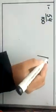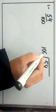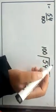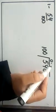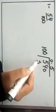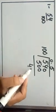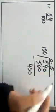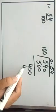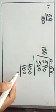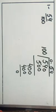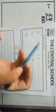Part 1 is 54 divided by 100. We will divide 54 by 100. Since 100 is the greater number and 54 is smaller, we will use a decimal point. After dividing, 10 fives are 50, remainder 4; then 10 fours are 40, remainder 0. So, 54 over 100 is equal to 0.54.